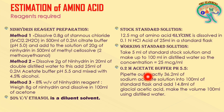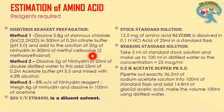Ninhydrin can be dissolved by three different methods. In the first method, dissolve 0.8 grams of stannous chloride in 500 ml of 0.2 molar citrate buffer at pH 5, then add a solution of 20 grams of ninhydrin in 500 ml of methyl cellosolve (also called 2-methoxyethanol). Stannous chloride acts as a catalyst to support the reaction of ninhydrin with the amino acid.